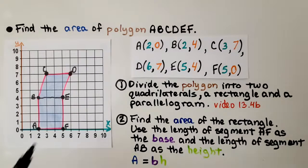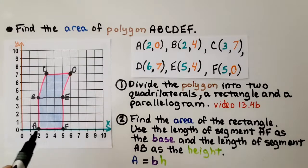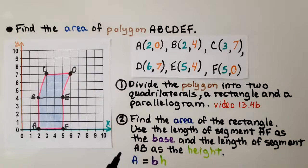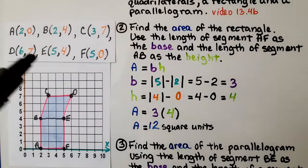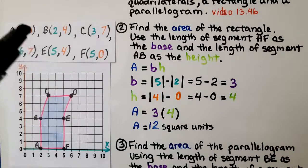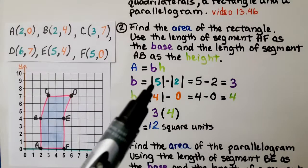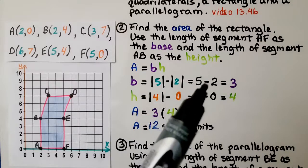Now we're going to find the area of this rectangle. We're going to use the length of segment A, F as the base and segment A, B as the height, because for a rectangle, area equals base times height. From A to F, the points for A are (2, 0) and for F are (5, 0). Because the Y values are the same, we use the X values: the absolute value of 5 minus the absolute value of 2 is 5 minus 2, which is 3.